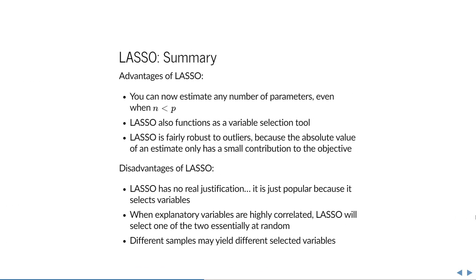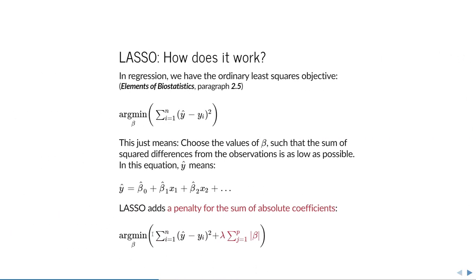Why would you use lasso? First, we can estimate parameters even when we don't have enough observations, which is very useful. Lasso not only fixes the n < p problem but also functions as a variable selection tool. Additionally, lasso is fairly robust to outliers because the absolute value of an estimate only contributes modestly to the objective — absolute values grow less quickly than squared values, so large outliers have less impact than in ordinary least squares.